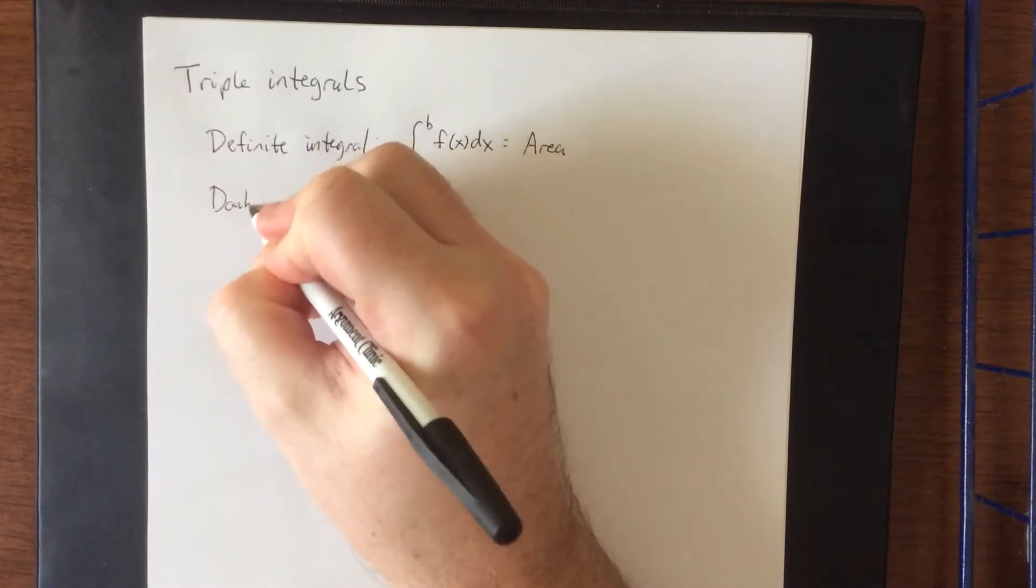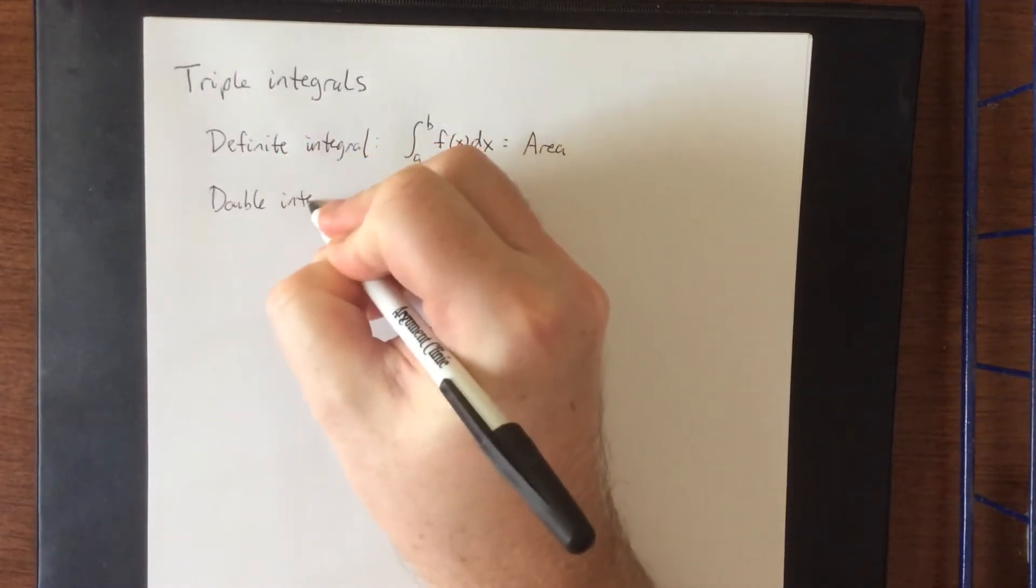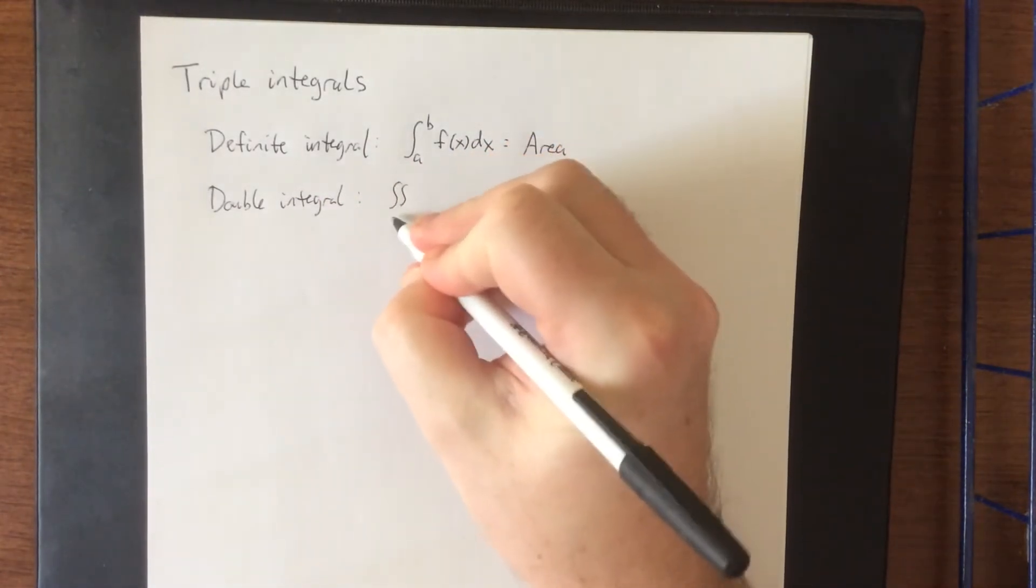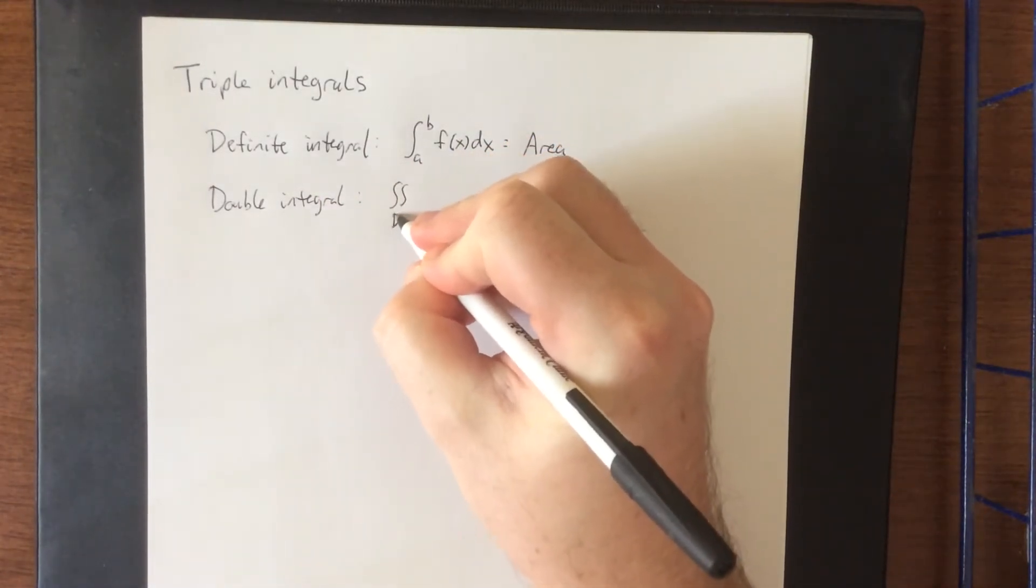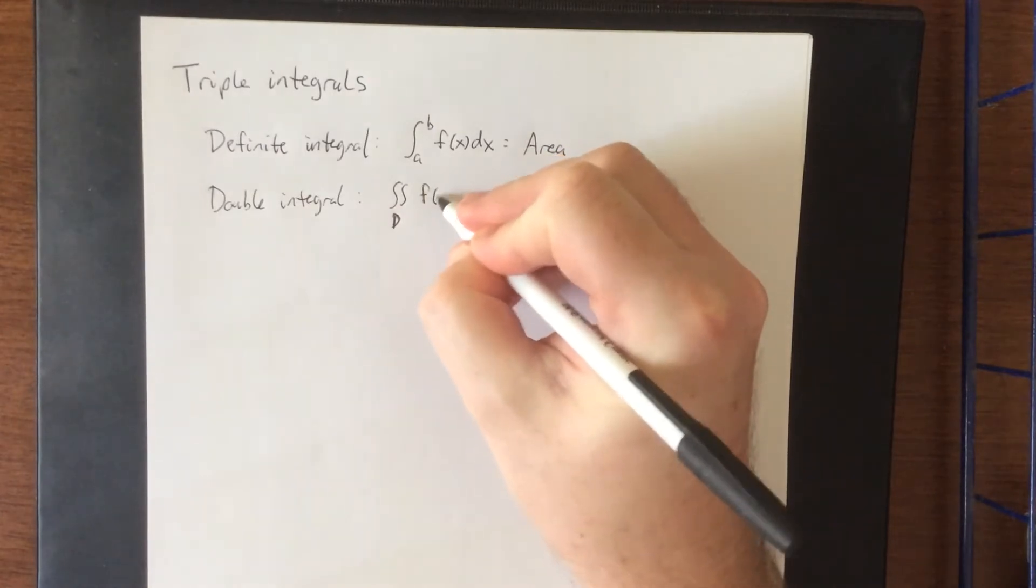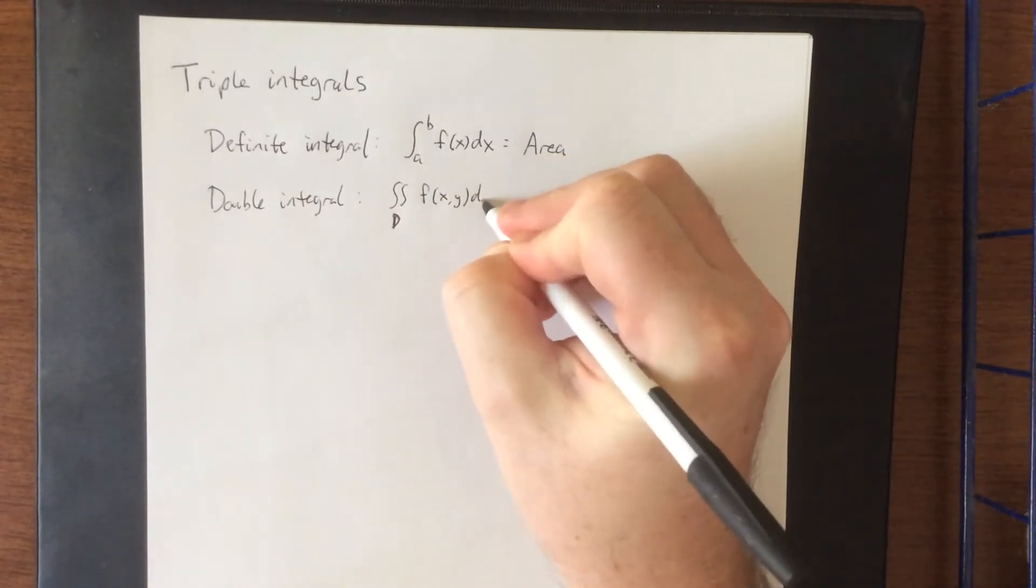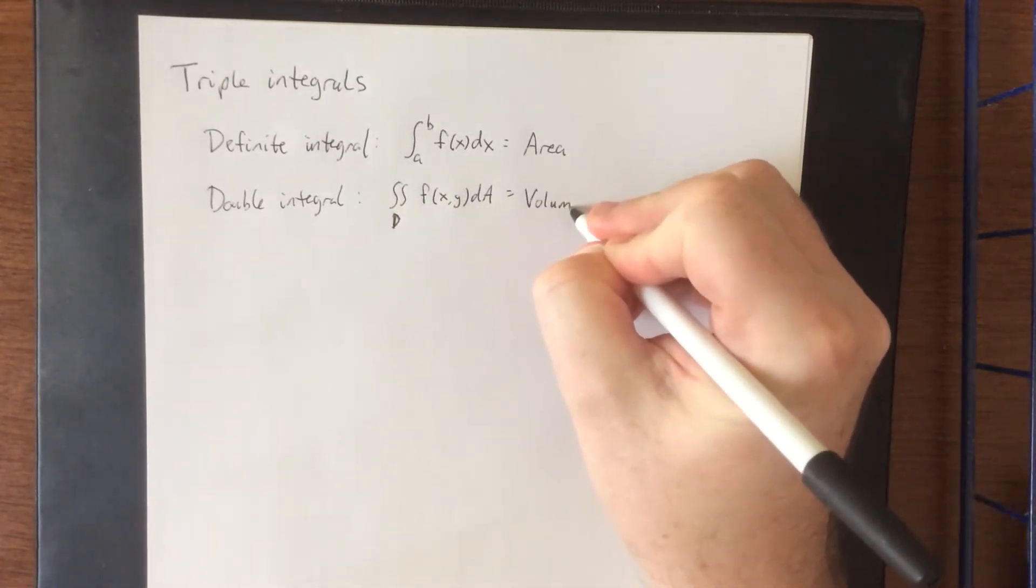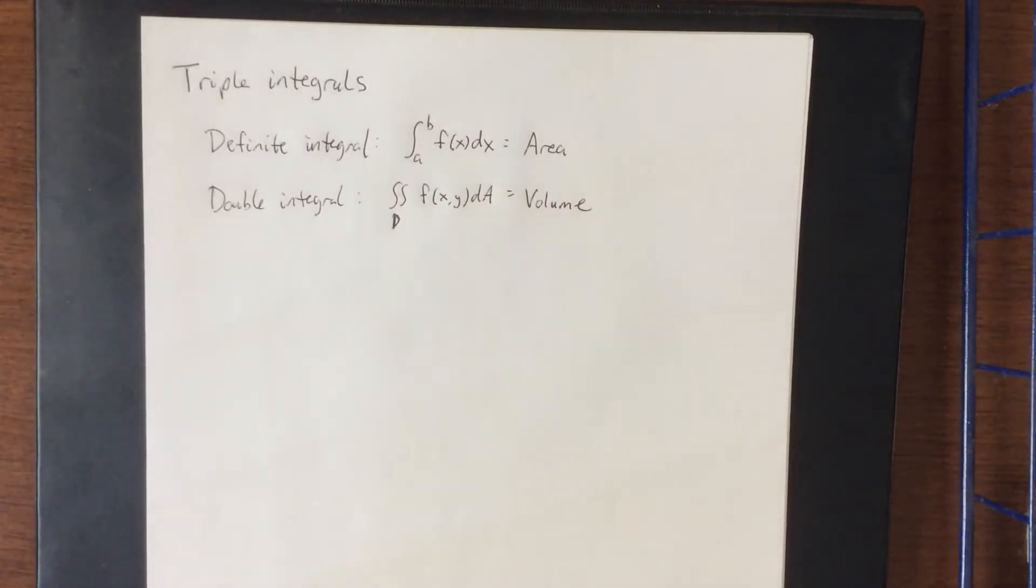Then we upped it to the double integral. The double integral said take the double integral over a domain D of a function of two variables. Take one function, integrate it twice, you wind up with something three-dimensional, that would be considered a volume.